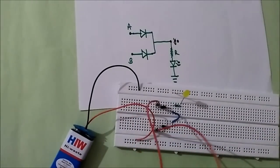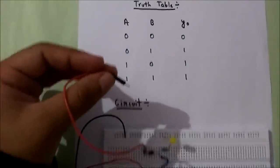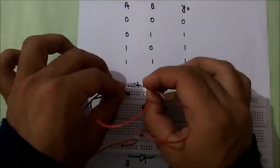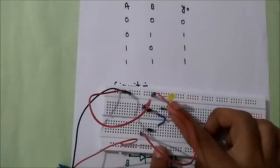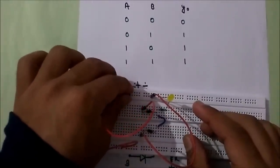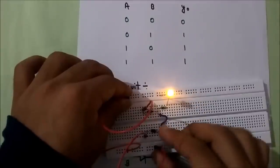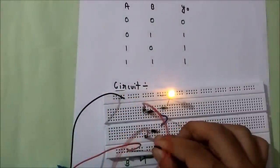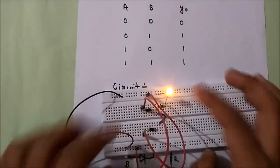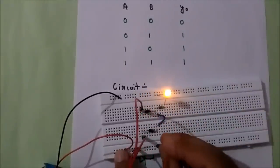Now I'll give logic for 0,0 first — I should get 0. I'll connect both A and B to zero. For 0,0 I'm getting zero — no output. If I give 0,1, connecting A to zero and B to one, I should get one. You can see the LED is on. If I connect A to one and B to zero, I'm getting again 1 output. If I connect both to one, I'm also getting 1.